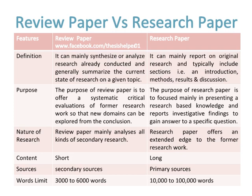The nature of research in a review paper mainly analyzes all kinds of secondary research, while the nature of research in a research paper offers an extended edge to former research work. The content of a review paper is short while the content of a research paper is long. Sources of review papers are secondary sources while sources of research papers are primary sources. Word limits for review papers are 3,000 to 6,000 words, while word limits for research papers are 10,000 to 100,000 words.